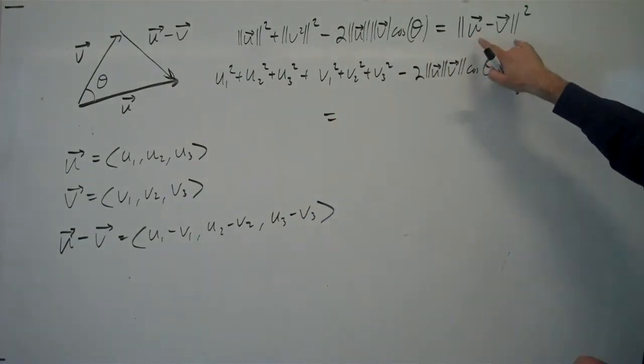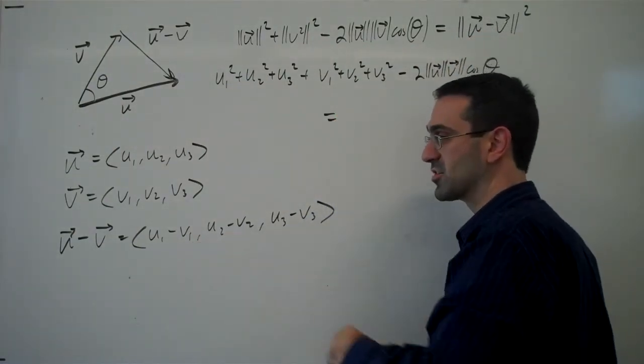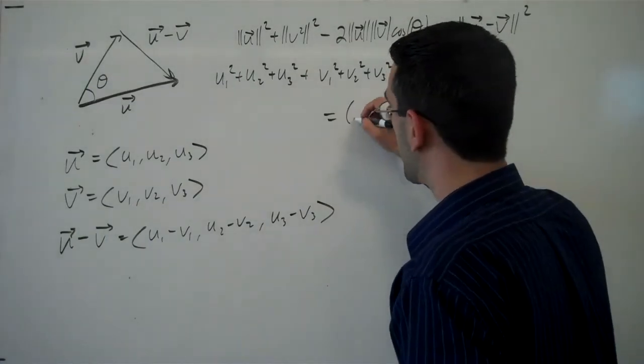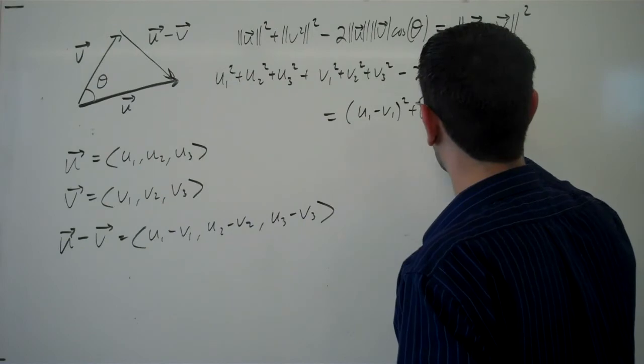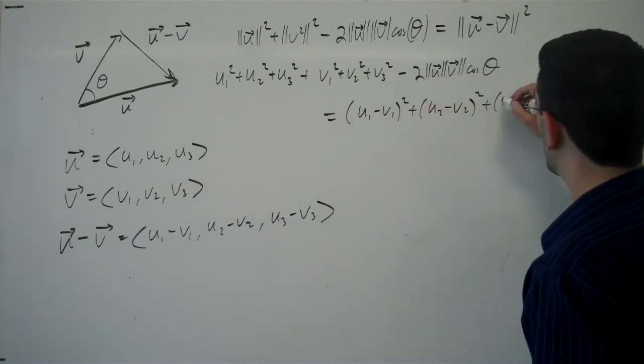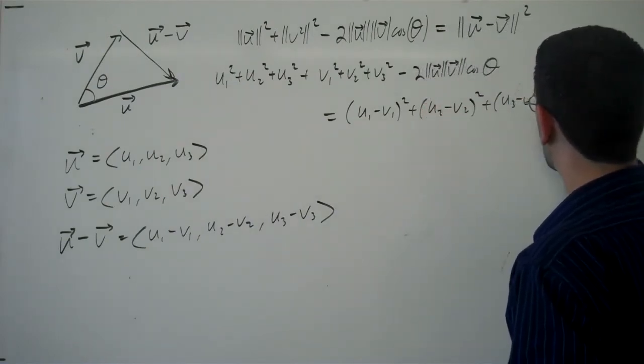Equals, and now the magnitude of this vector squared will be u1 minus v1 squared plus u2 minus v2 squared plus u3 minus v3 squared.